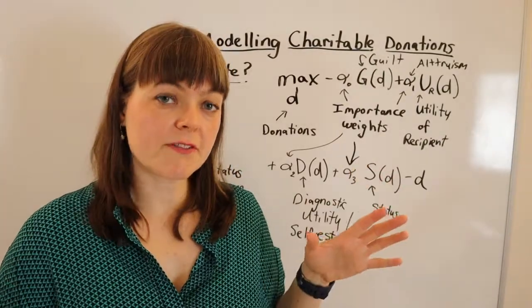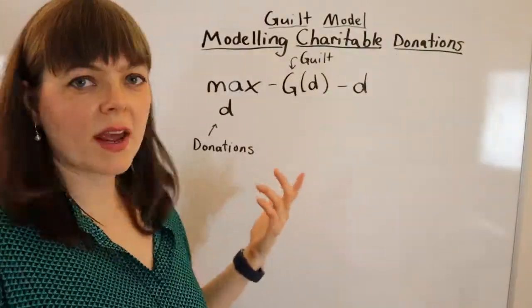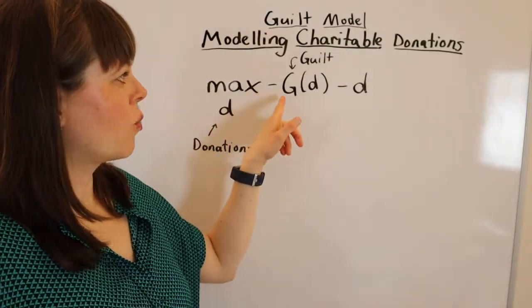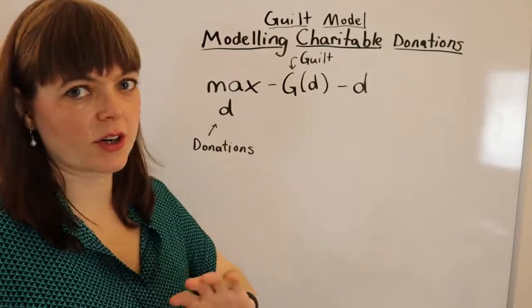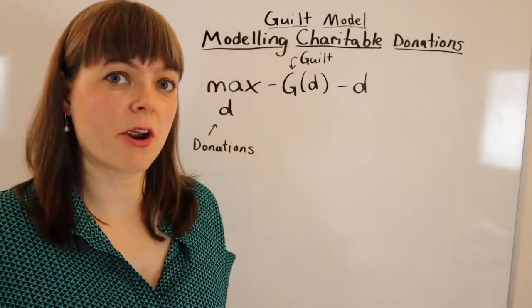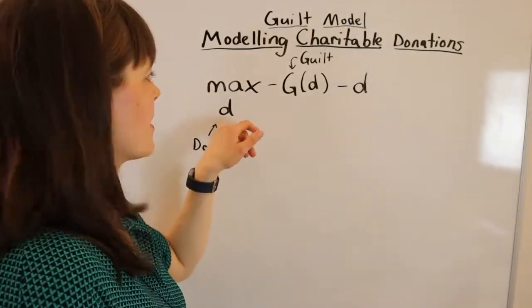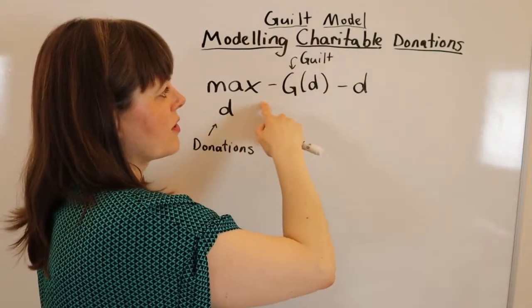So let's simplify the model and just look at guilt to begin with. Here we have the simplest possible model of charitable donations, where our main motivation for giving is guilt. And, of course, this is just one component, but I'd like to separate this out and look at the comparative statics of this model separately from the other motivators in charitable giving.